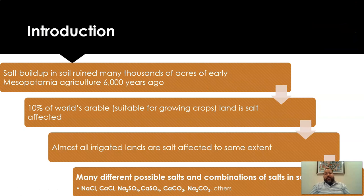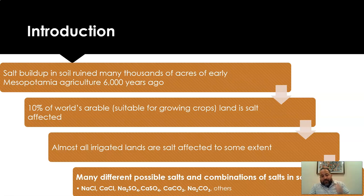How did salt come to be a problem? Salt buildup first started ruining soil back in Mesopotamia, when they were first trying to figure out agriculture about 6,000 years ago — they were already dealing with salt issues. About 10% of the world's arable soils are salt affected. This is a decent-sized problem. Almost all irrigated lands are salt affected to some extent, and part of the idea of irrigation is to keep the salt under control.